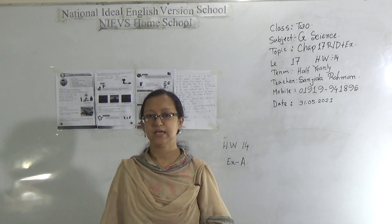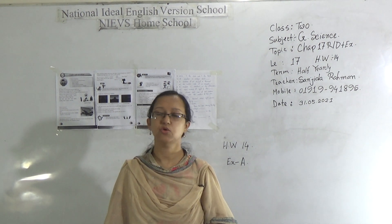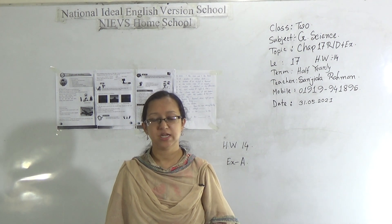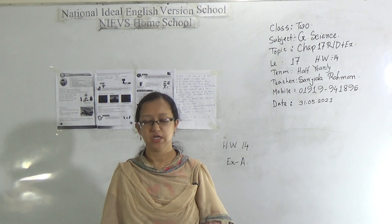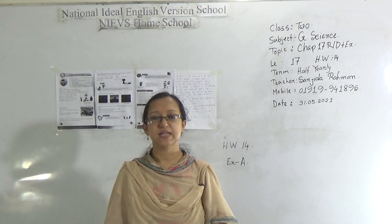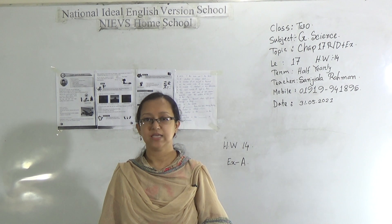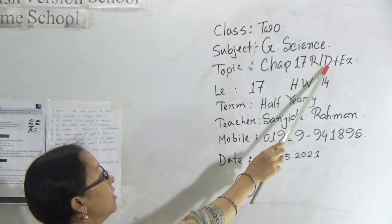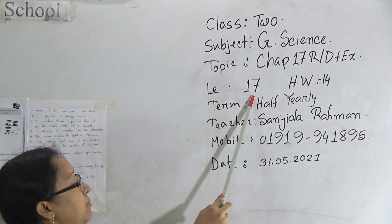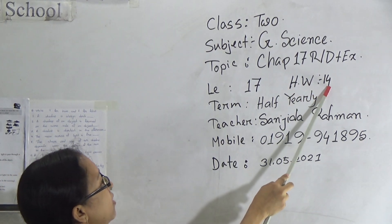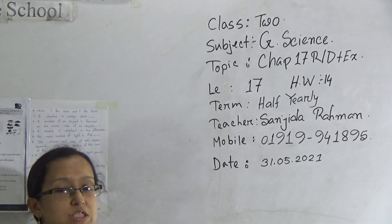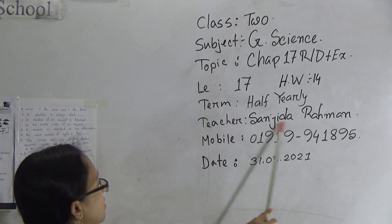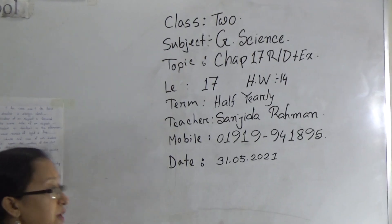Assalamualaikum, welcome to our NI English Homeschool. My dear students, hope you are all well by the grace of Almighty Allah. I am Shanjit Arman, Assistant Teacher of National Ideal English Version School, Deshi. Today, I am going to take a science class for the students of class 2. Our today's class topic is Chapter 17, Reading Done and Exercise. Lecture number 17 and homework number 14, the homework given after the class. Our term is half yearly exam.